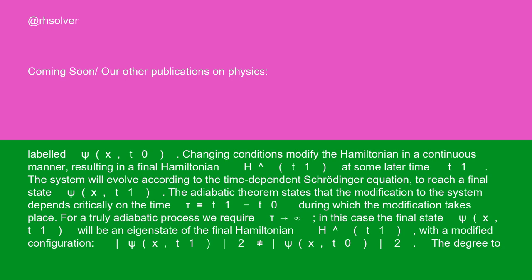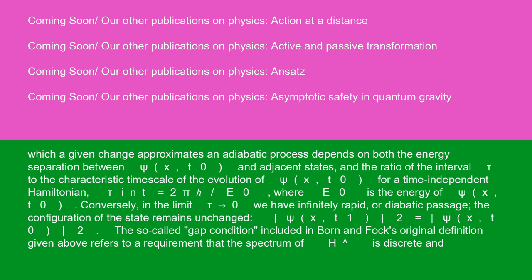The degree to which a given change approximates an adiabatic process depends on both the energy separation between psi(x, T0) and adjacent states, and the ratio of the interval tau to the characteristic time scale of the evolution of psi(x, T0). For a time-independent Hamiltonian, the internal time scale tau_int equals 2π/E0, where E0 is the energy of psi(x, T0).